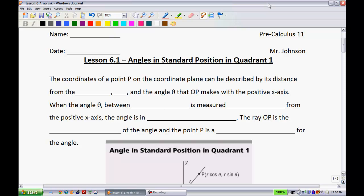Alright, so let's get started in this lesson here. The coordinates of a point P on the coordinate plane can be described by its distance from the origin, and the angle theta that OP makes with the positive x-axis. When the angle theta between 0 degrees and 360 degrees is measured counterclockwise from the positive x-axis, the angle is what we call in standard position.